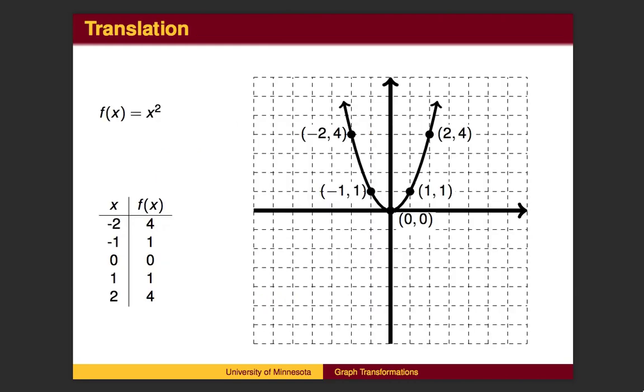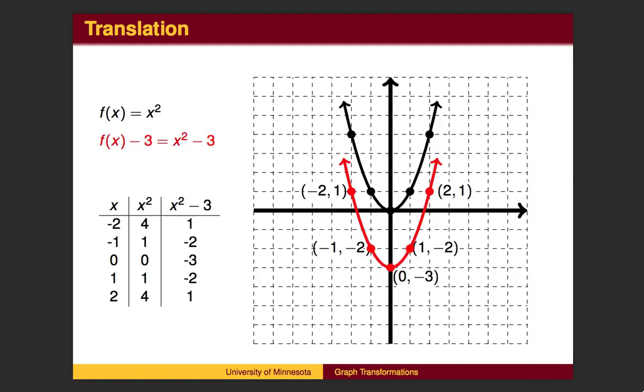Let's begin with the graph of y equals x squared. Five key points are labeled in the graph at the right. What happens when we subtract 3 from the function? To get the y values for the red graph, we begin by squaring the x value to get the values in the middle column, then subtract 3 from each to get the values in the right column. This decreases each y value by 3.